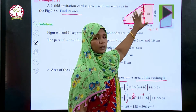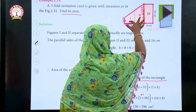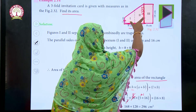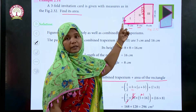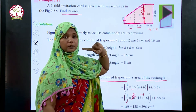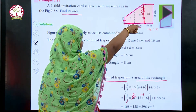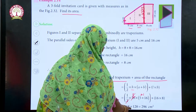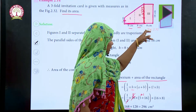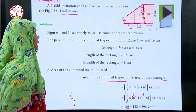To summarize: in this three-part card, the third part is a rectangle, and combining the first and second parts gives a trapezium. The two parallel sides are 5 and 16 — our A and B values. The distance between the parallel sides is 8 plus 8, which is 16, so H is 16. Half times H times (A plus B) gives 168, and the rectangle area (16 times 8) is 128. The total is 296 centimeters squared.